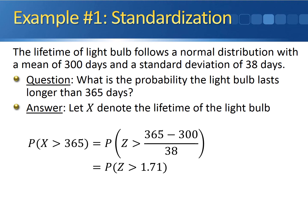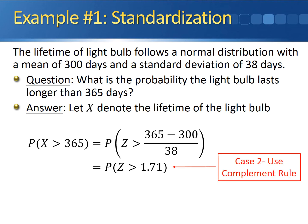Now, notice here we have a greater-than sign, so what we have is case two. In case two, where we're looking for the area above some Z-score, we use the complement rule. So we can rewrite the probability that z is greater than 1.71 as 1 minus the probability that z is less than 1.71.